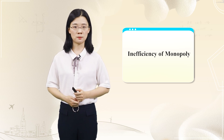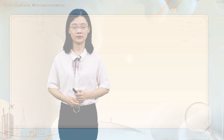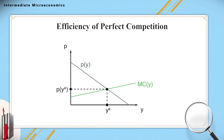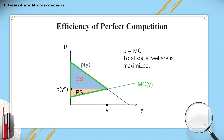The perfect competitive market provides us with a good basis for comparison. In a perfect competitive market, the equilibrium satisfies P equal to MC. Using the concepts of consumer surplus and producer surplus, the consumer surplus CS is the area of the upper triangle in the figure, and the producer surplus PS is the area of the lower triangle. Total social welfare is the sum of CS and PS — the area of the large triangle — which is already the maximum possible. Increasing or decreasing output level cannot enlarge this triangle. So the perfect competitive market is Pareto efficient.